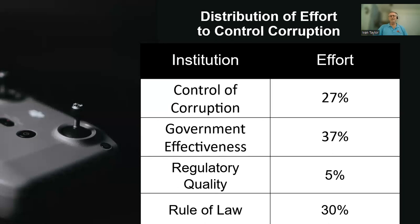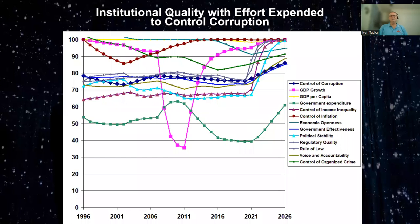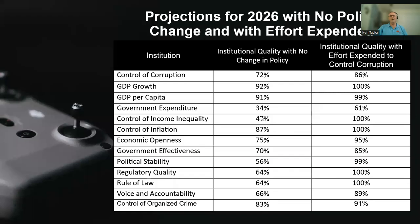When we apply this extra effort to control corruption, all of the institutions are now trending upwards. In particular, control of corruption has changed direction and is now moving in a good direction. The detailed projections show a clear difference between institutional quality with no change in policy versus institutional quality with effort expended to control corruption — quite a great improvement across all institutions. By investing in controlling corruption, we can improve all institutions across the board.